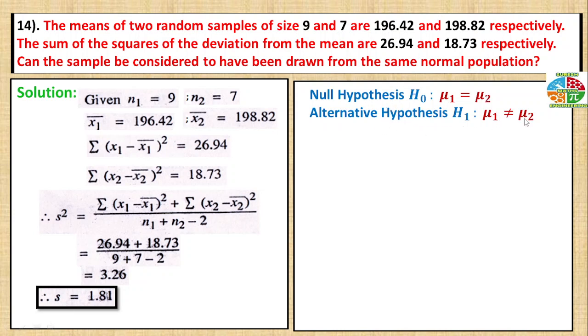Null hypothesis: mu1 equals mu2. Alternative hypothesis: mu1 not equal to mu2. The two population means are not equal.